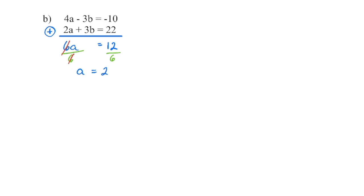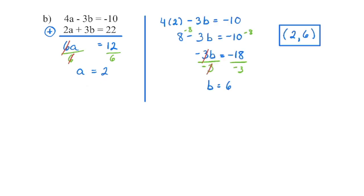You're going to like this more than graphing. Once we have the first variable, we're going to solve for the second one by choosing one of those equations, substituting in the value of a, and solving for b. I happened to go with the first equation — I liked negative 10 better than 22, but it doesn't matter. So we substitute in 2 for a: we have 8 minus 3b equals negative 10, then isolate b. When writing the ordered pair, if you're not given x and y, list the terms alphabetically, so a comes before b. Quickly verify: 4 times 2 is 8; negative 3 times 6 is negative 18; 8 minus 18 is negative 10. Substituting into the second: 2 times 2 is 4, plus 18 is 22. The left side equals the right side.